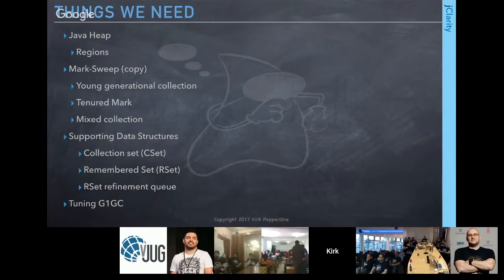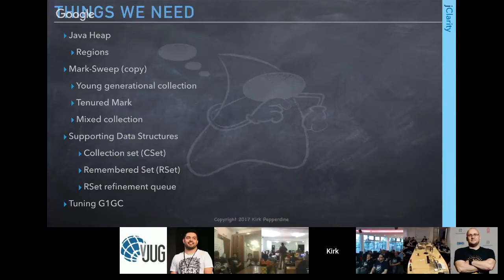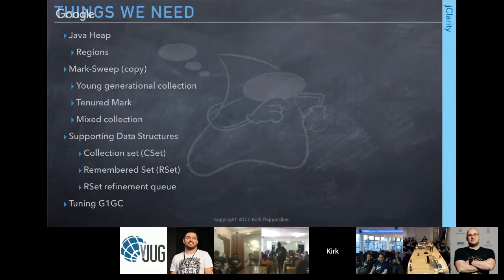Key things to know: G1 is a regional collector that partitions the heap differently. The algorithms are variants on familiar themes — mark-sweep is the weapon of choice for managed runtimes. G1 has young generational collections, tenuring, and something called mixed collections. Important data structures include collection sets, remembered sets, and refinement queues.